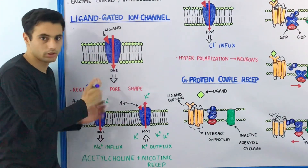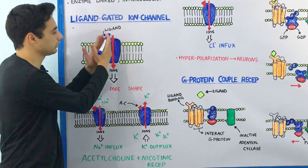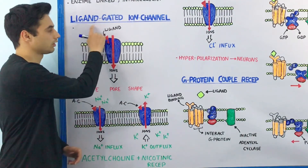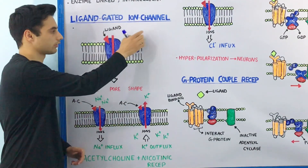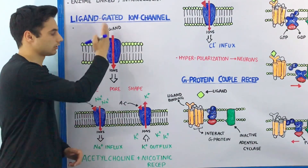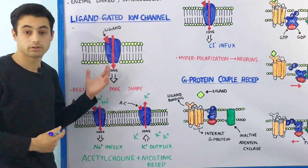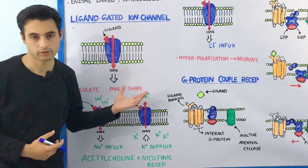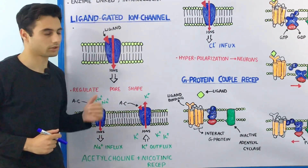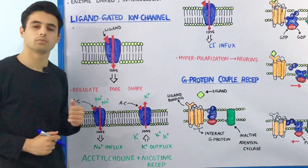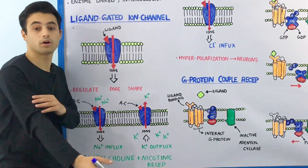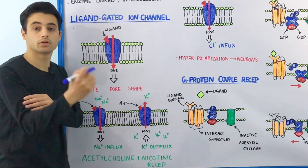In other words, it will open the ion channels. The ions which are in abundance outside of the cell will move inside. This is how the ligand-gated ion channel performs its action — very simple to understand. This phenomenon is used in action potential generation or the contraction of your skeletal and cardiac muscles.